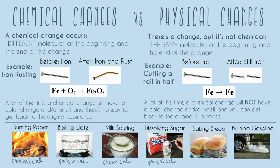Two more examples: baking bread. That has all of our signifiers of a chemical change — it has a color change, has a smell, and you can't go from bread back to dough. This is a chemical change.